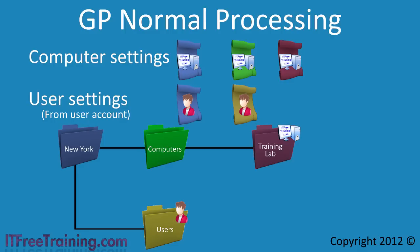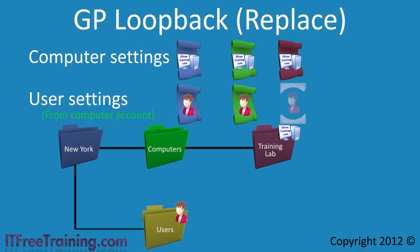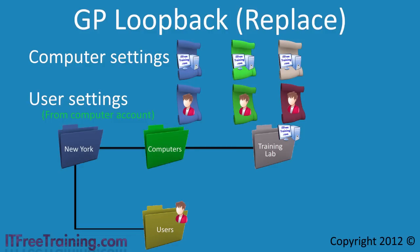There are two different modes that group policy loopback processing can be used in. The first is replace mode. When the computer starts up, the computer side of group policy based on where the computer account is located is applied. In any one of these group policies could be a setting which changes the processing from the standard way to group policy loopback. In this case, group policy loopback processing using replace mode will be applied to the training lab OU, so loopback processing will only be used with computers in that OU.